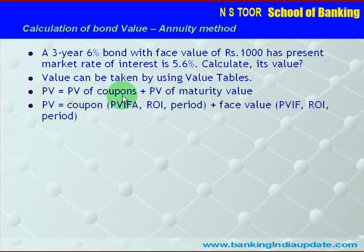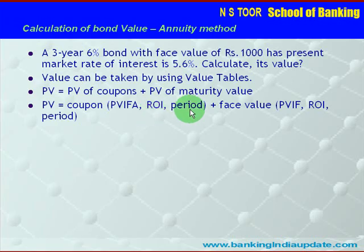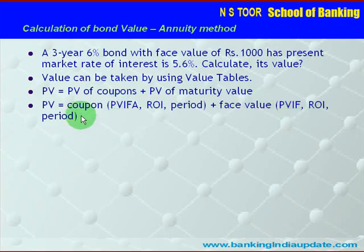To calculate the present value of the coupon, we use the annuity formula: coupon × annuity factor (rate of interest, period) + face value × discounting factor (rate of interest, period). This is the formula we are going to use. Now let us insert the values into this formula.